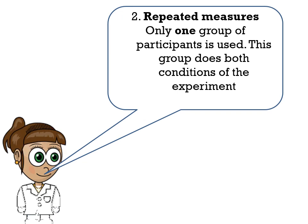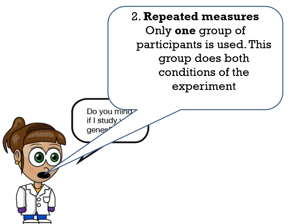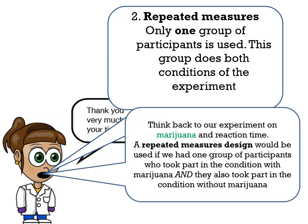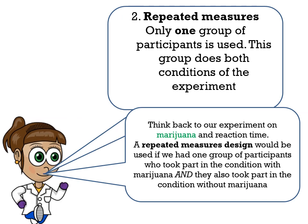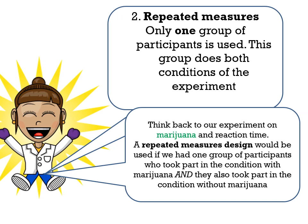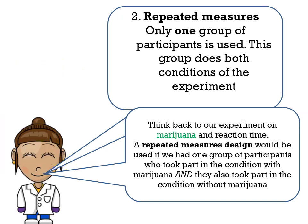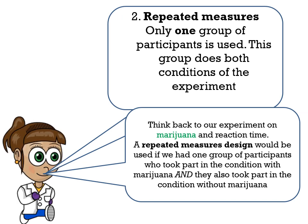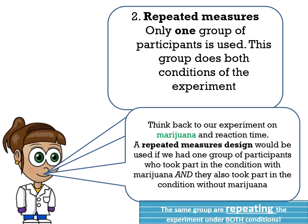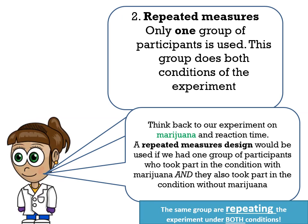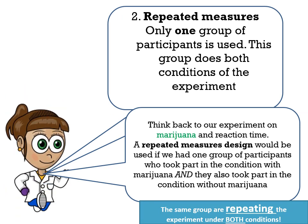The second experimental design is repeated measures. This is when only one group of participants is used and this group does both conditions of the experiment. In our experiment, a repeated measures design would be used if one group took part in the condition with marijuana, then came back later — maybe a few weeks later — and took part in the condition without marijuana. It is the same group of participants repeating the experiment under both conditions.